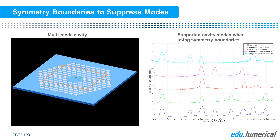Symmetry conditions can also be used as a tool to restrict the allowed symmetry of the fields. For example, you could use symmetry to restrict the polarization of modes of a waveguide or to isolate modes of resonant cavities so that only modes with the desired symmetry can exist.